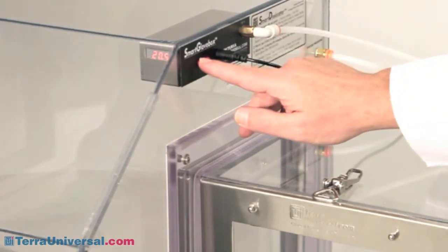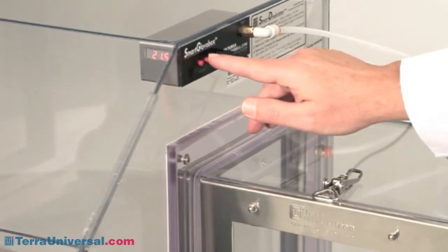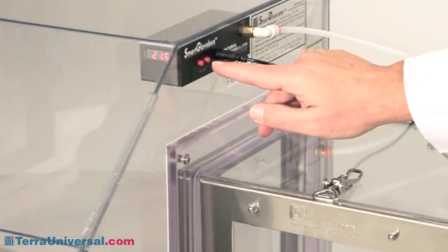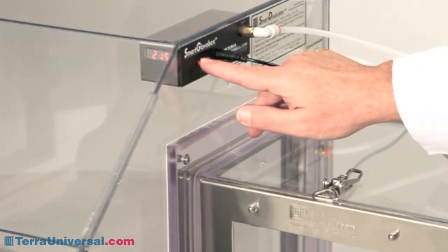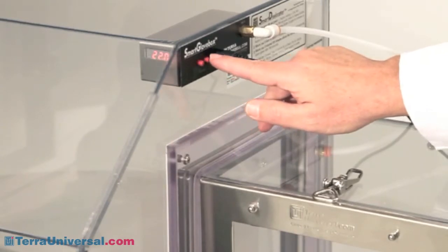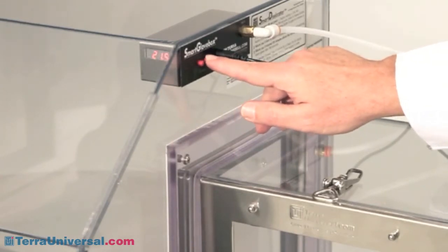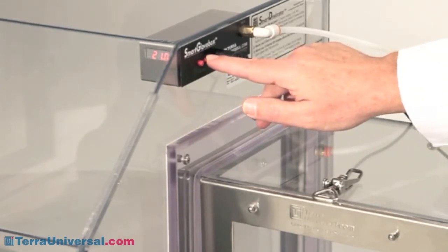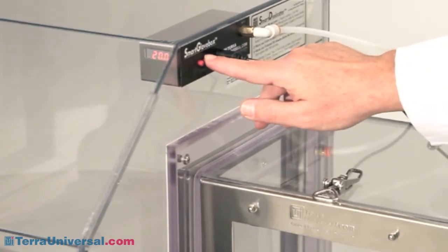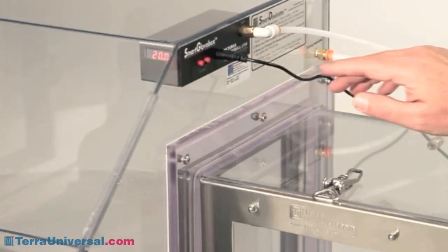To view the current humidity set point, press the A or left button once. Pressing it twice will let you raise this set point, and pressing the B or right button will let you decrease it. For demonstration purposes, let's lower the set point a couple of percents.